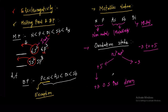One exception: nitrogen never shows pentavalence — it never forms compounds like NCl₅. This is due to its small size and the absence of d orbitals, so +5 is not possible for nitrogen. The −3 oxidation state of nitrogen is stabilized because of its high electronegativity and small size, as seen in NH₃.